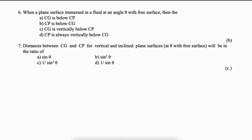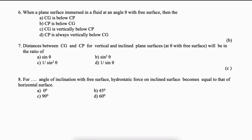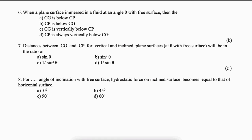For which angle of inclination with the free surface does the hydrostatic force on an inclined surface become equal to that of a horizontal surface? (A) 0 degrees, (B) 45 degrees, (C) 90 degrees, (D) 60 degrees. The answer is A — 0 degrees.